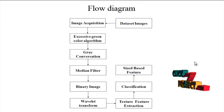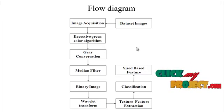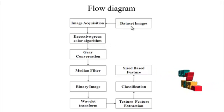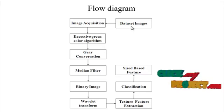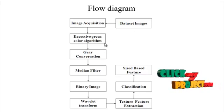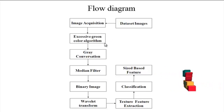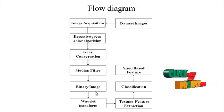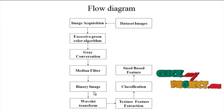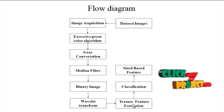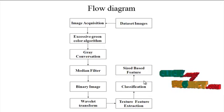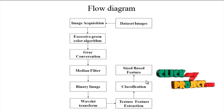Now let us discuss about the flow diagram of the process. First of all, image acquisition takes the input image from the dataset of crop and weed images. Then the pre-processing step applies the Excessive Green algorithm, gray conversion, and median filter. This produces a binary image, then wavelet transform is applied for texture feature extraction, and size-based feature classification is applied to finally detect the crop and weed.